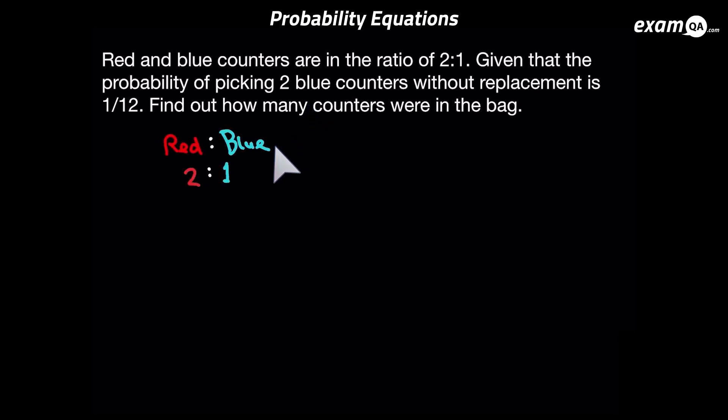The ratio from the question tells us red and blue counters are in the ratio of 2 to 1. Since the question has told us the probability of picking two blue counters, we need to make an equation about that. To do so, we need to know how many blue counters are in the bag — we need to think about number of counters rather than the ratio, and at the moment we don't know the number of counters.